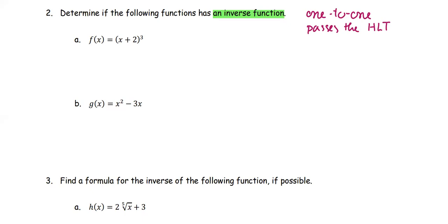With part a, f of x is the quantity x plus 2 to the power of 3. This is the transformation of the more basic function x to the power of 3, which is in this form.